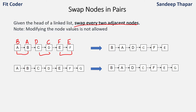In the second example AB will be swapped, CD will be swapped and EF will be swapped. But G has no node to swap so G will remain as it is. When we are swapping the adjacent nodes we are not changing the values — we are changing the pointers.